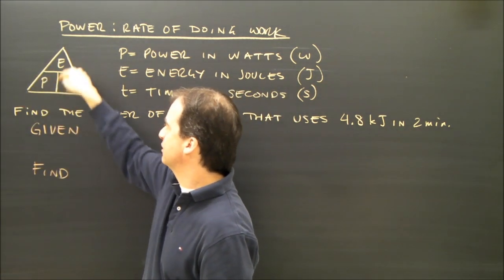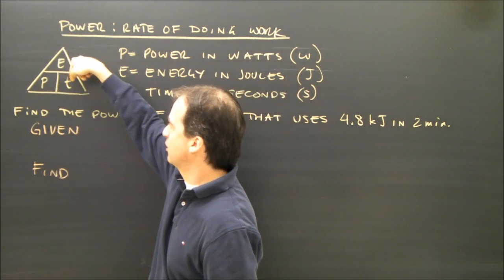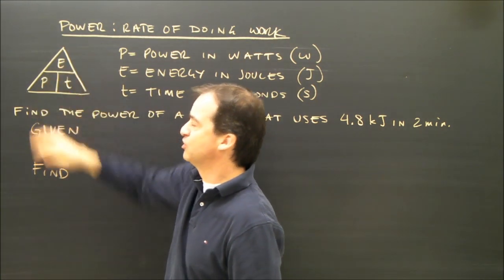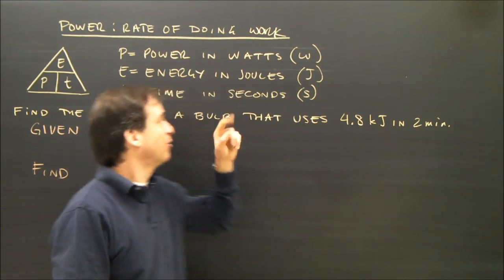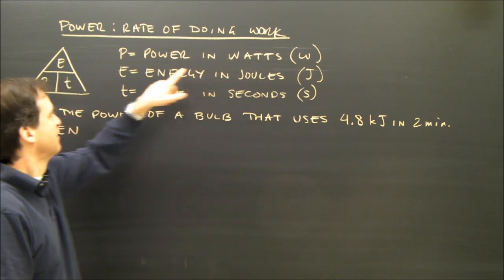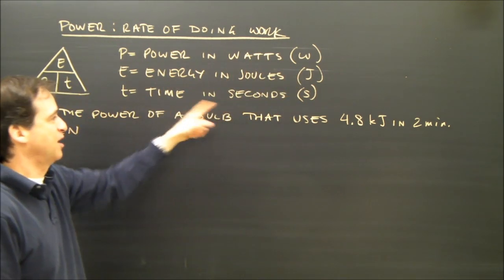Power is energy divided by time. Energy is power times time. Time is energy divided by power. The power is in watts. The energy is in joules. And the time must be in seconds.